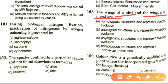Next question: the wings of a bird and the wings of an insect are homologous structures representing divergent evolution, analogous structures representing convergent evolution, phylogenic structures representing divergent evolution, or homogeneous structures representing convergent evolution. The correct answer is analogous structures representing convergent evolution, because their function is the same.